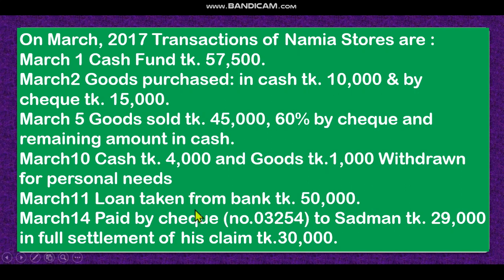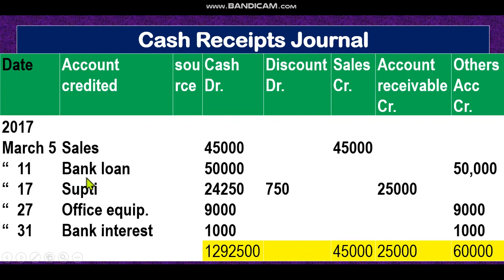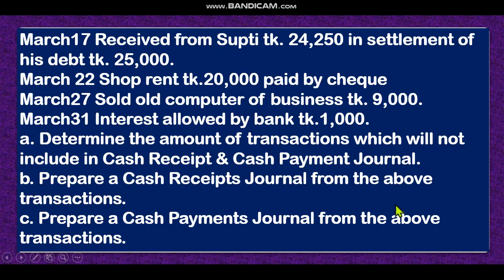Cash 4,000 and goods 1,000 withdrawn for personal needs — cash money goes out, so it will not be in the cash receipt journal. Loan taken from bank 50,000 — by this we receive money, our cash increases. Account name: bank loan. We receive 50,000, so 50,000 in the cash column and 50,000 in the others column — because it is not sales and not accounts receivable. Cash account debit, loan account credit.